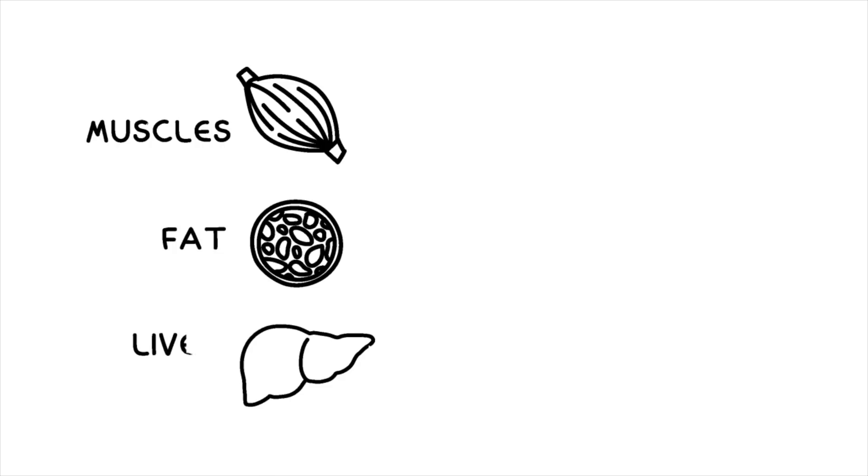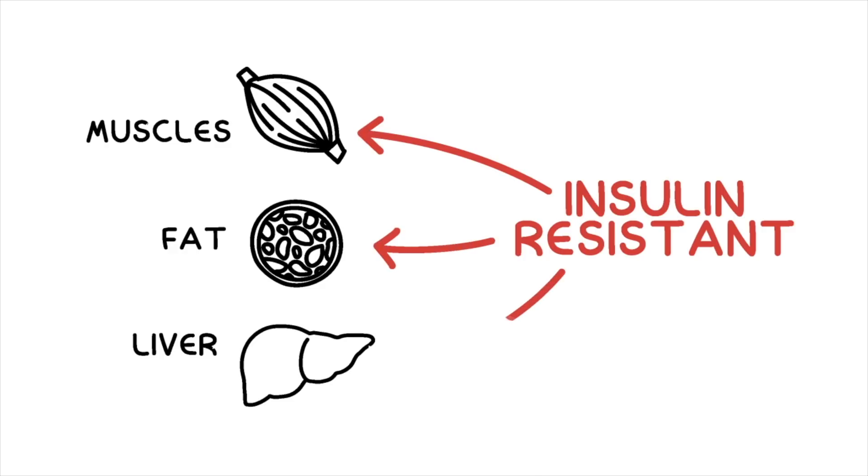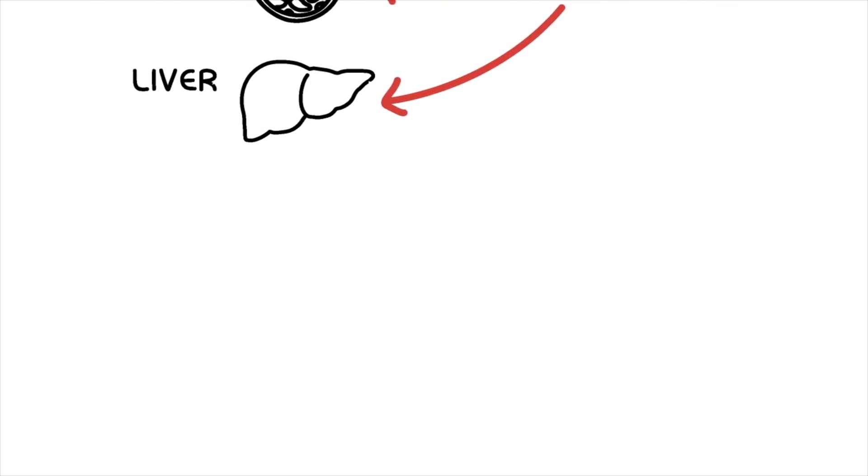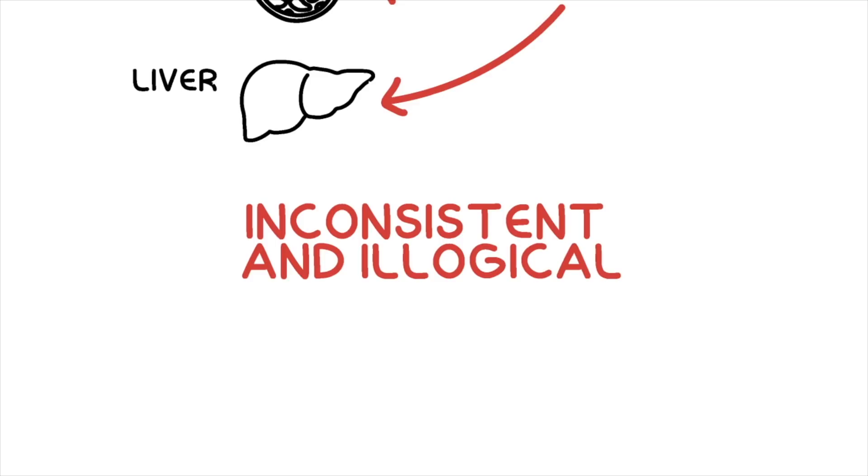For example, diabetes experts say that insulin resistance occurs with only 3 types of organs – muscles, fat tissue, and the liver. How could this be? Why only 3 types of cells, but not other cells such as in skin, bone, brain, kidney, and so on?